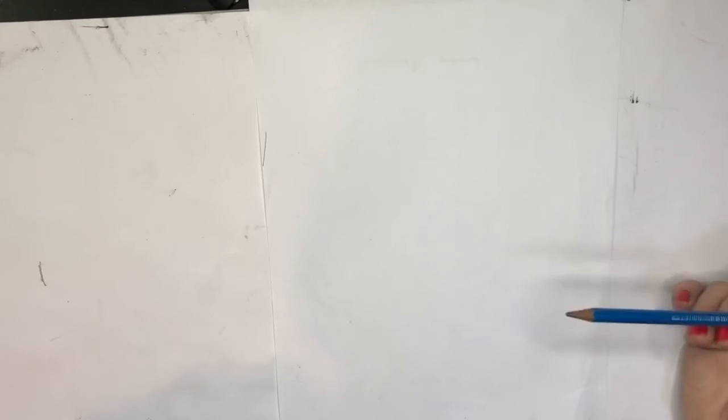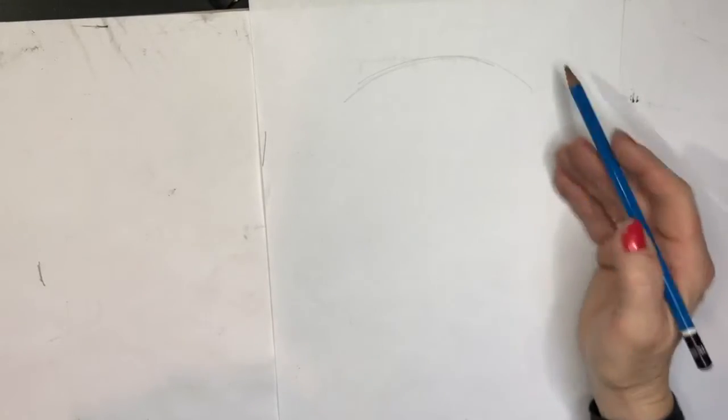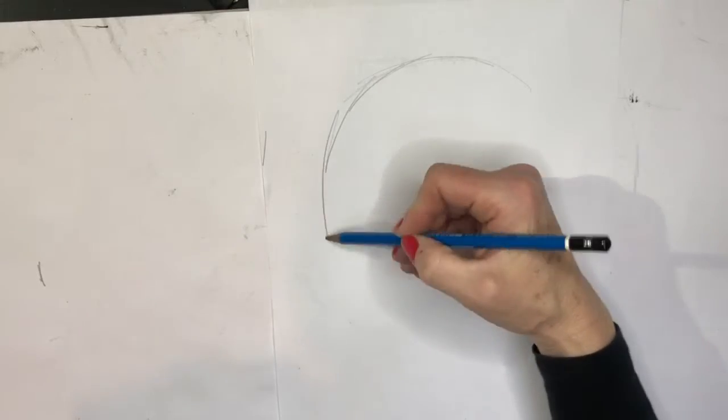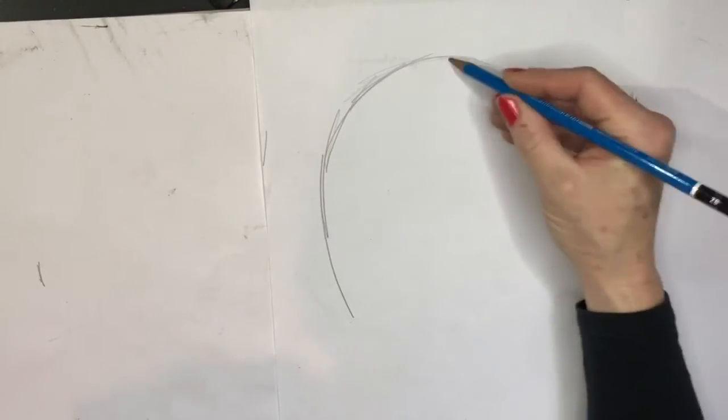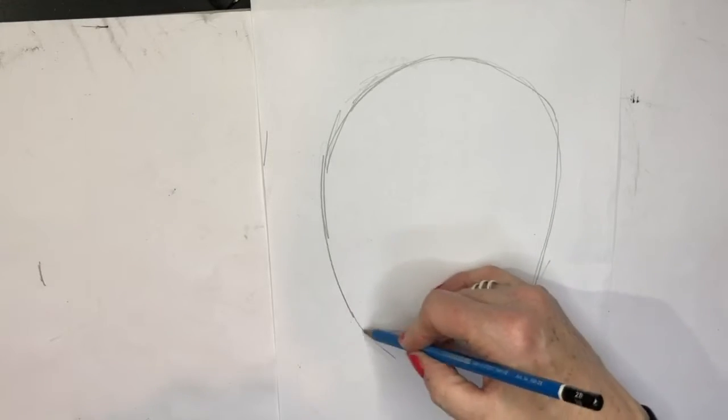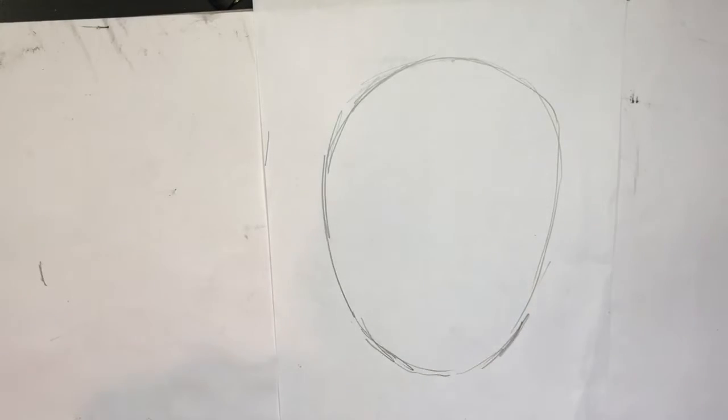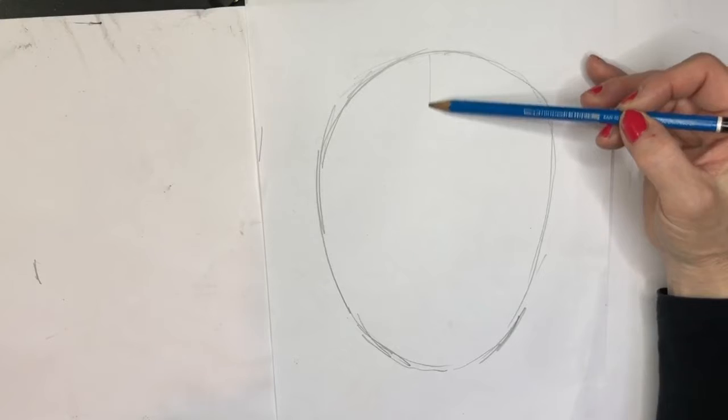Now how would I start? If I was starting to do a portrait, I would draw an upside down egg shape. This shape will need to be revised later so I would draw it gently. I'm obviously pressing down quite hard so you can see what I'm doing, but when you're doing it maybe draw lightly.